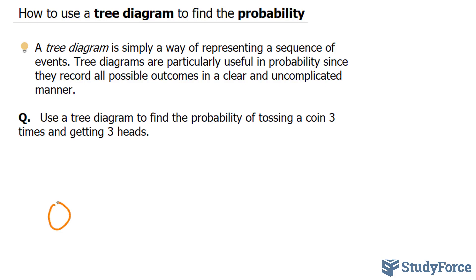And after one toss, so here's our coin, after the first round of tossing, you have the probability of obtaining heads half and tails half.